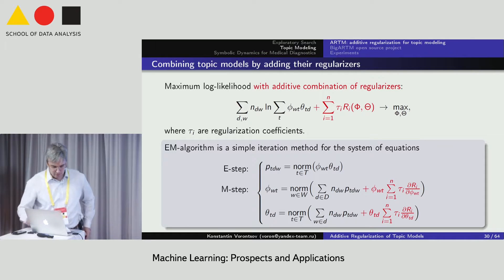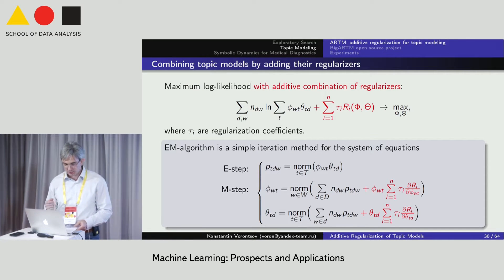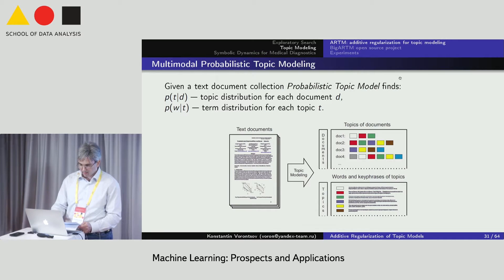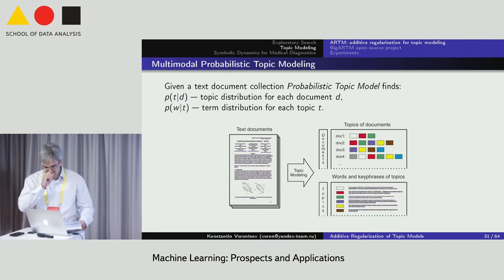But the main feature of additional regularization of topic models is a possibility to combine topic models. The original ill-posed problem has so huge stock of solutions that we can add maximization criteria to the log likelihood more and more. For example, after making our topics highly decorrelated, we can proceed with another regularization criterion and make them besides highly sparse.